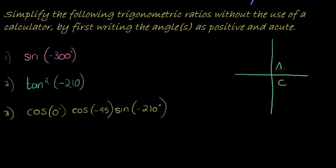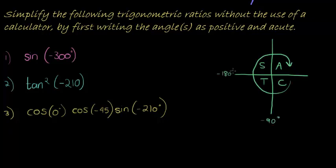So this is the CAST diagram. We're working with negative angles, as you'll notice here — most of them. That means we're going to number them clockwise: negative 90 degrees, negative 180 degrees, negative 270 degrees.